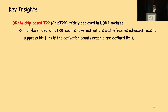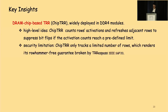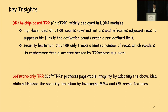Our approach is inspired by a widely deployed hardware defense: DRAM chip-based Target Row Refresh, also called Chip TRR. At a high level, Chip TRR counts row activations and refreshes adjacent rows to suppress bit flips if activation counts reach a predefined limit. However, Chip TRR can only track a limited number of rows due to limited hardware space. Strobe paths in IEEE S&P 2020 broke Chip TRR's security guarantee using many-sided hammering. To address these security limitations, we propose Soft TRR — a software-only approach that leverages MMU and OS kernel features.